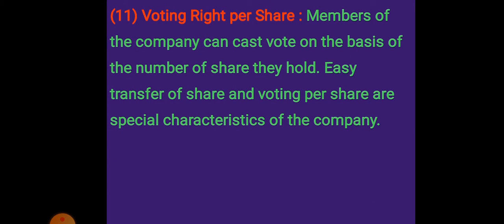The last characteristic is voting rights. The company divides its capital in the form of shares, and those who hold shares are known as shareholders. They get voting rights per share and can cast votes according to the number of shares they hold. These votes are cast for the election of the board of directors and for passing or making any changes in the rules and regulations of the company.